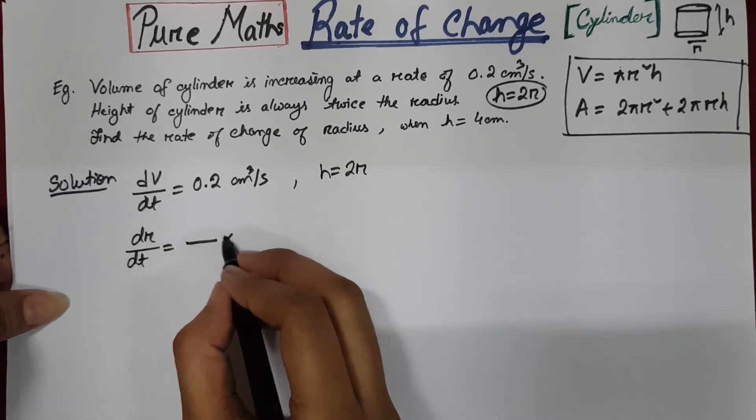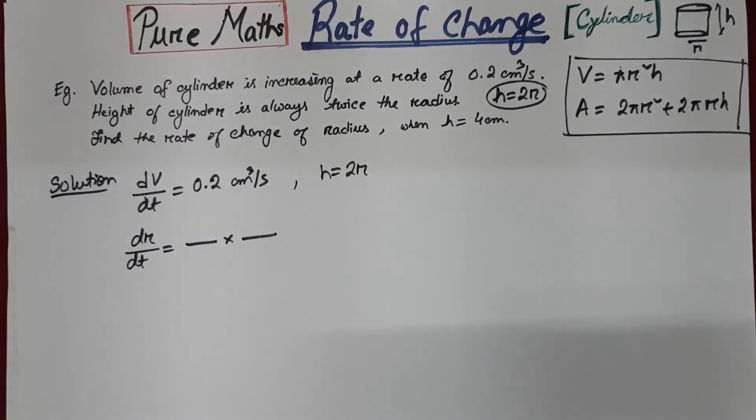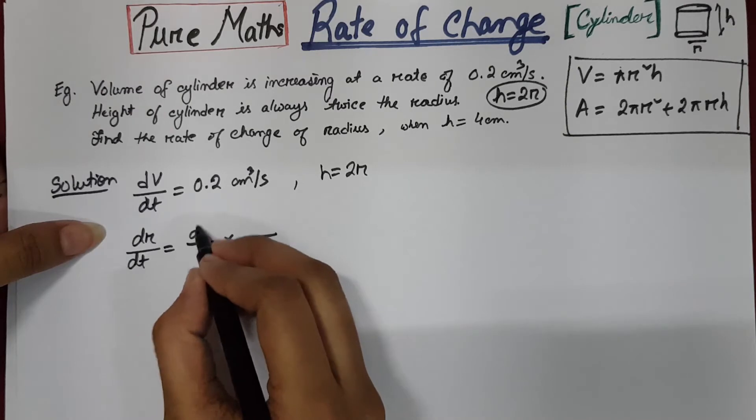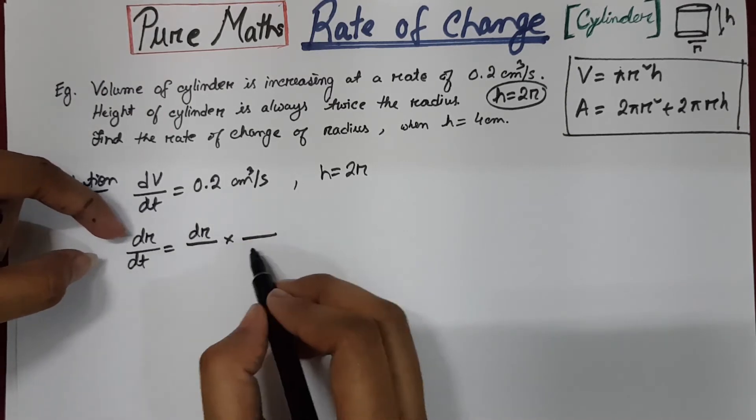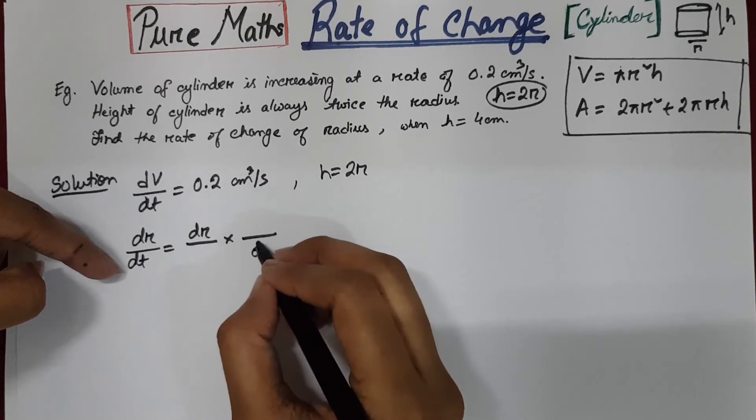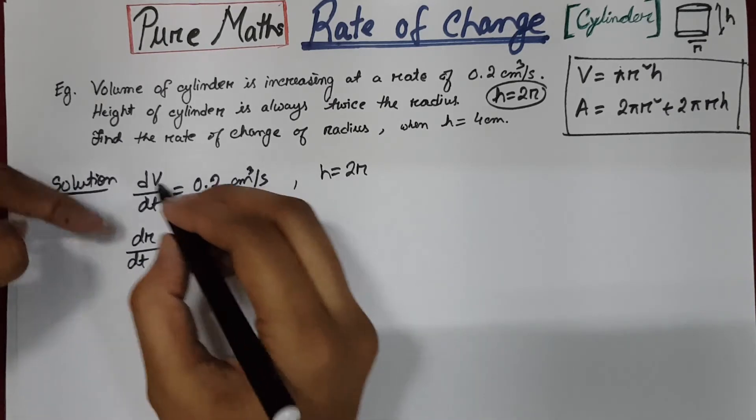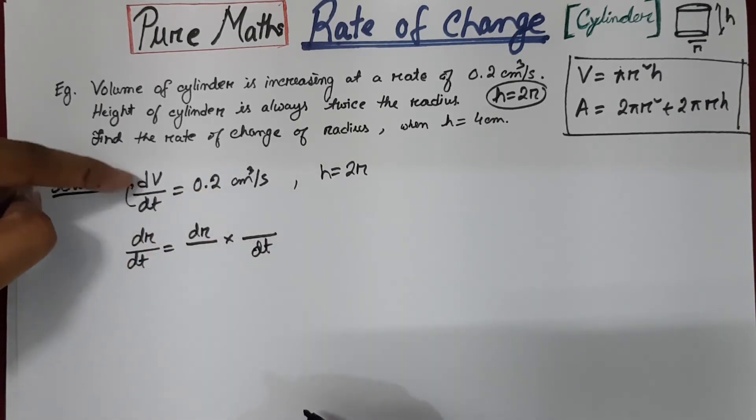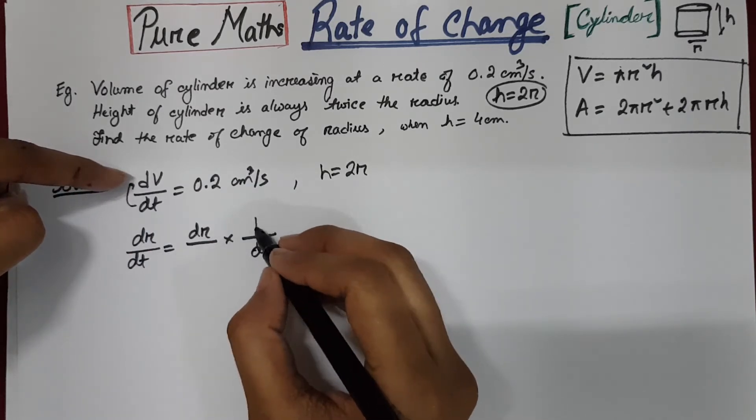So like I have shown in the previous videos, replace this position by dr and the denominator of the second term by dt. Then we have here dv above the dt. So replace with dv.